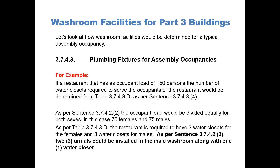Let's look at how washroom facilities would be determined for a typical assembly occupancy. We look at Article 3743. For example, if a restaurant has an occupant load of 150 persons, the number of water closets required to serve the occupants of the restaurant would be determined from Table 3743-D, as per sentence 3743(4). As per sentence 3742(2), the occupant load would be divided equally for both sexes — in this case, 75 females and 75 males.